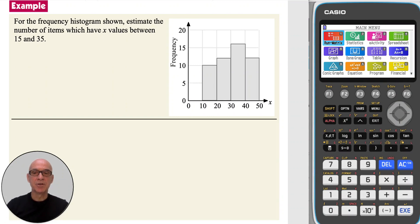In this question, we're asked to estimate the number of items which have values between 15 and 35. If we begin by estimating the frequency of each bar, it may help to write your estimates on top of each bar, as shown. Then identify 15 and 35 on the x-axis.